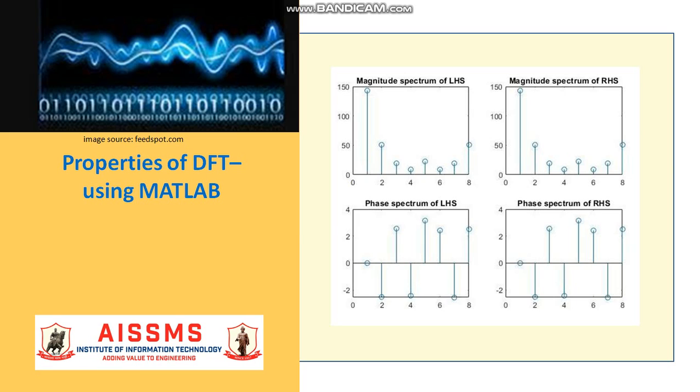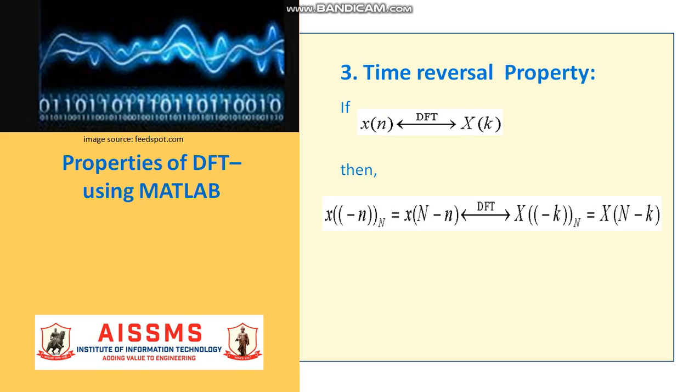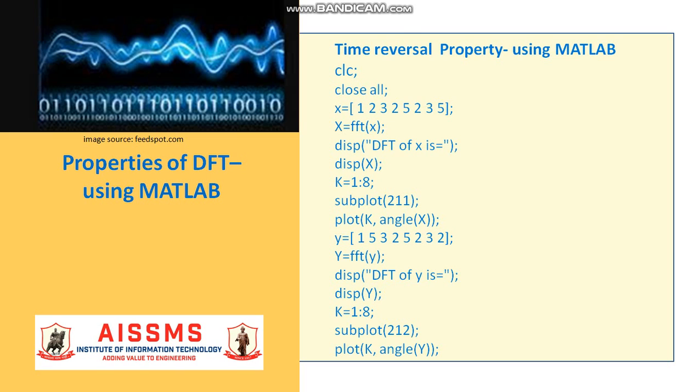The third property discussed in this video is time reversal property. If DFT of X of N is X of K then X of minus N is equal to X of N minus N and the DFT gives X of minus K which is equal to X of N minus K. Here double parenthesis indicates that it is periodic with period N. Let us demonstrate this property with the help of a MATLAB program. We have to write a program to calculate DFT of X of N using FFT command.